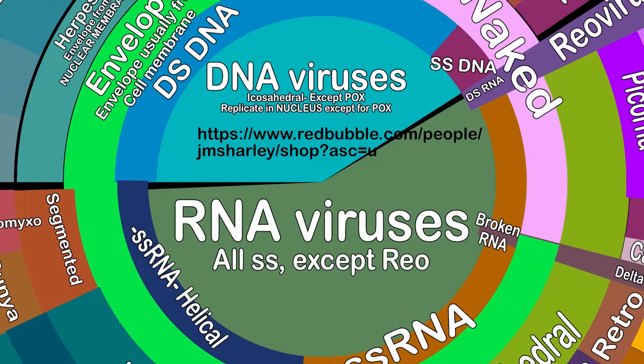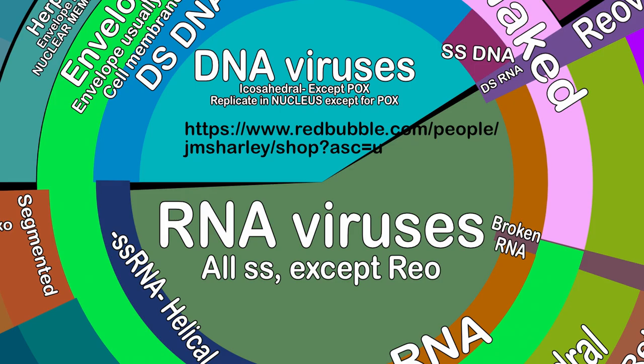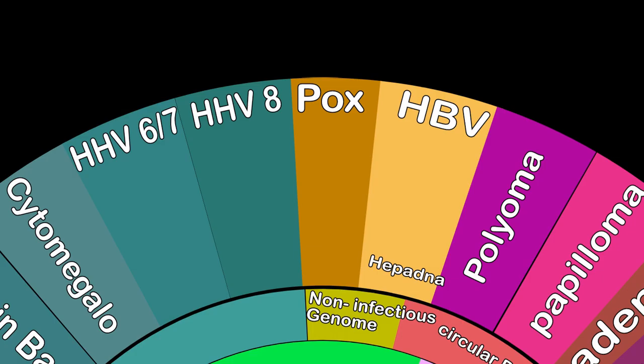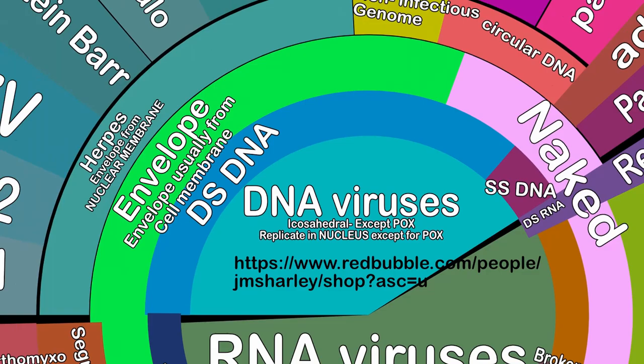Viruses are generally categorized as DNA or RNA, referencing their genetic material. All DNA viruses are icosahedral — think of a 20-sided dice — except for pox over here on the top, and most use double-stranded DNA, except parvovirus over here on the right.